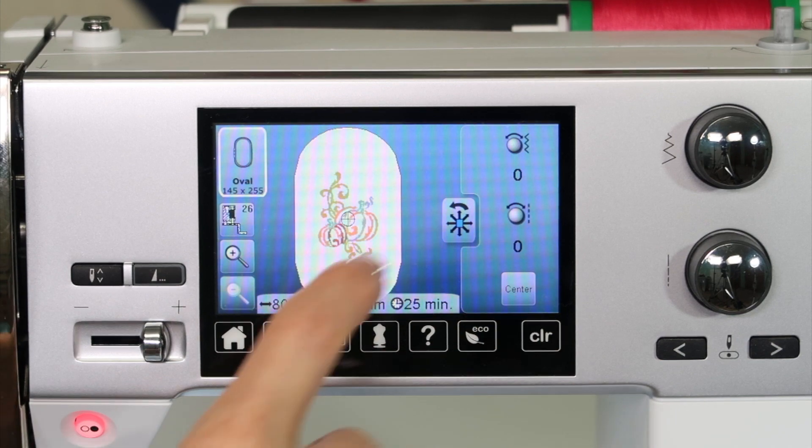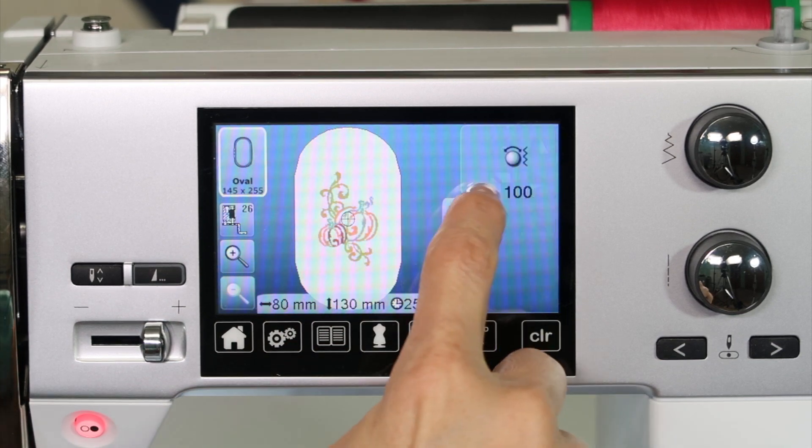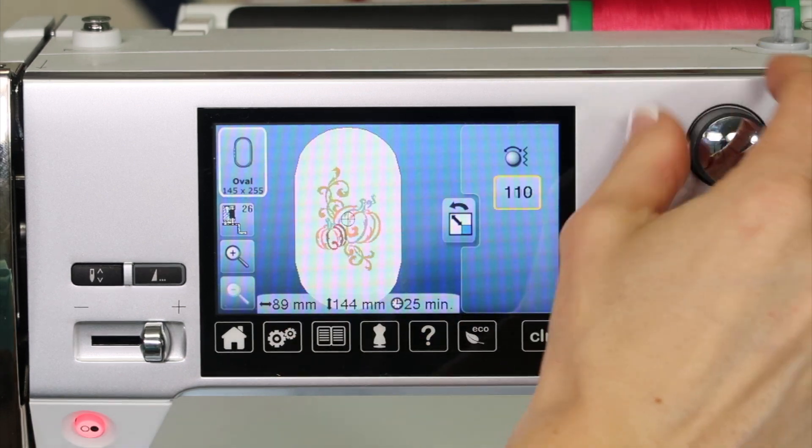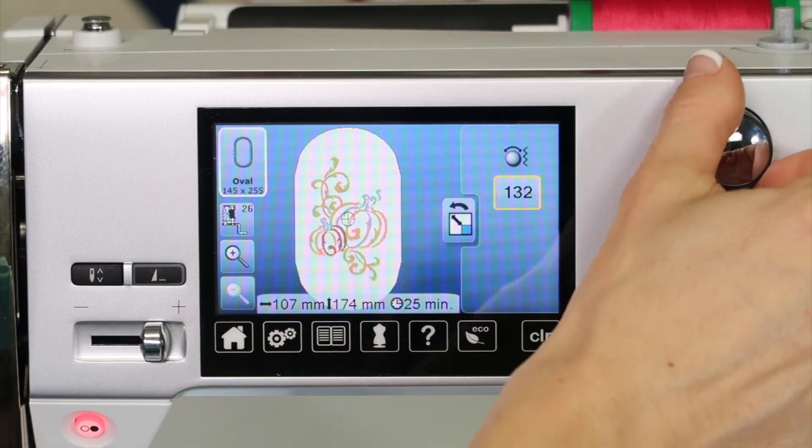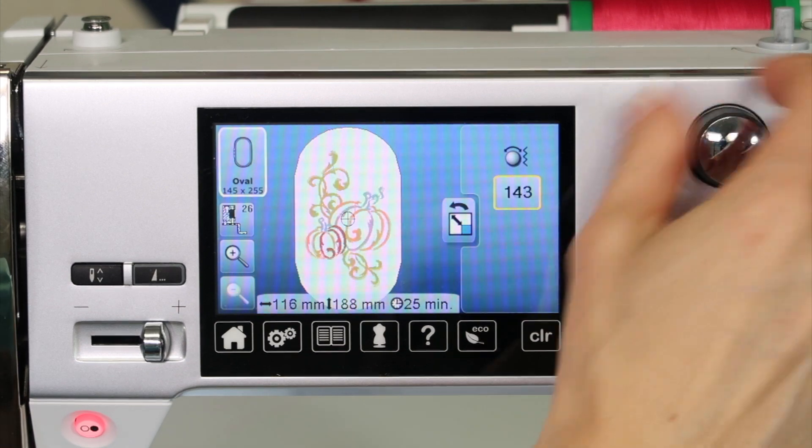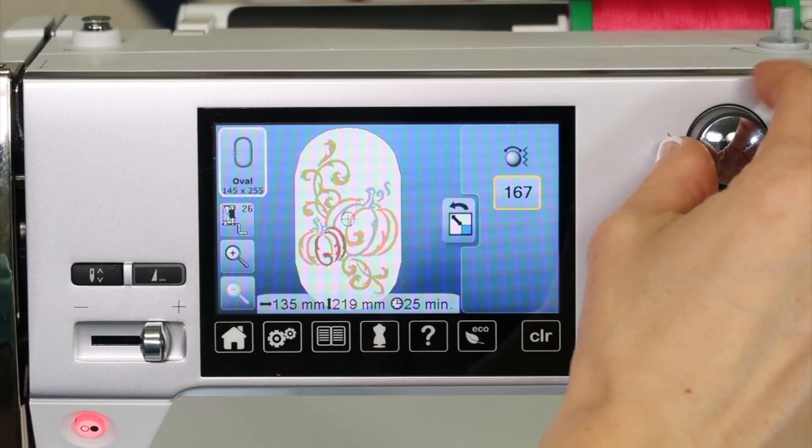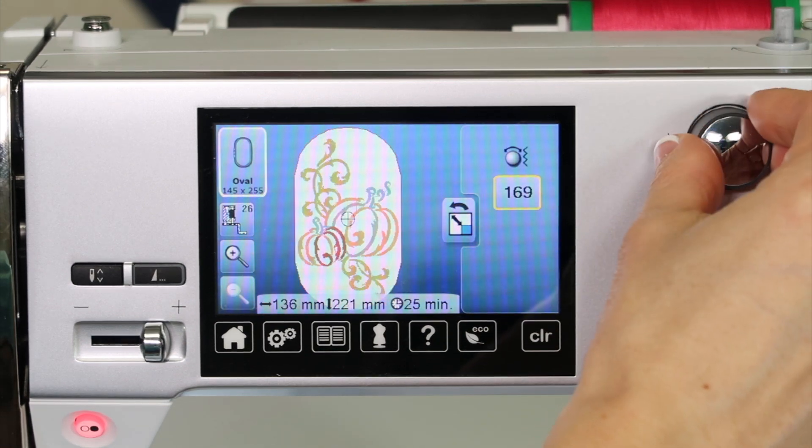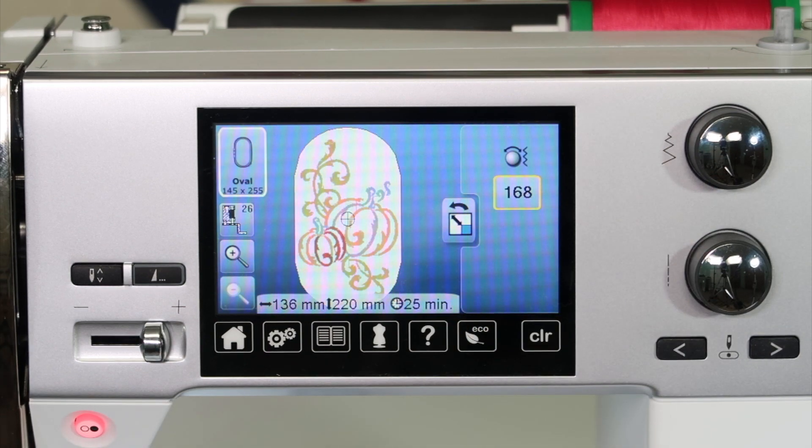There's a centering option, so that can bring you right back to where you are. The sizing option, one of my favorites, because at a quick little turn of those knobs, I can make that design even as big as my hoop. Let me see how far that will go. Yes. A little bit too far. 168% bigger.